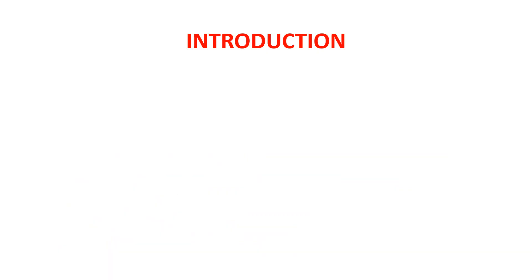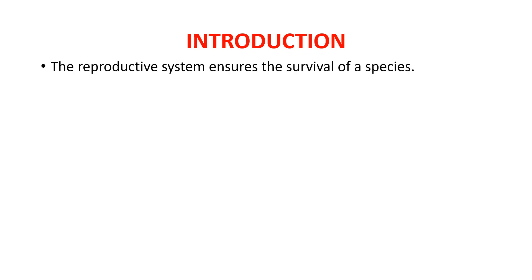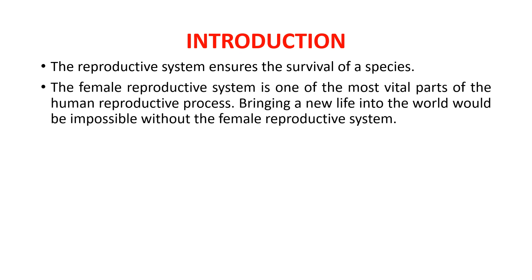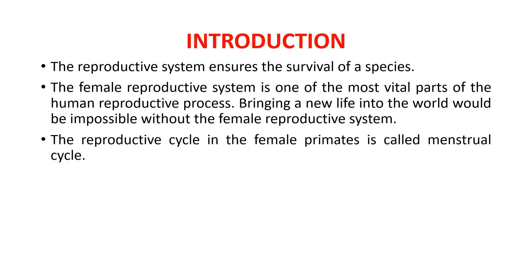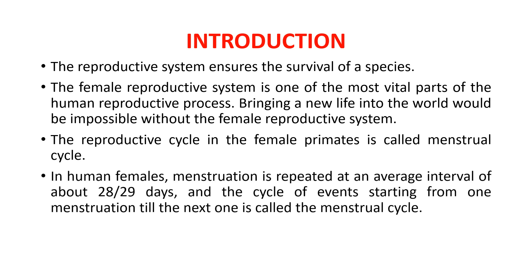Let us come to the introduction part of the topic. The continuity of races of any species depends upon the reproductive system. The female reproductive system is one of the most vital parts of the human reproductive process as it brings a new life to the world. It consists of the ovaries, oviduct, uterus, vagina and the external genitalia. The reproductive cycle that occurs in the female primates is known as the menstrual cycle. In the human females, the phase of menstruation is repeated at an interval of about 28 to 29 days, and the cycle of events starting from one menstruation till the next one is called the menstrual cycle.